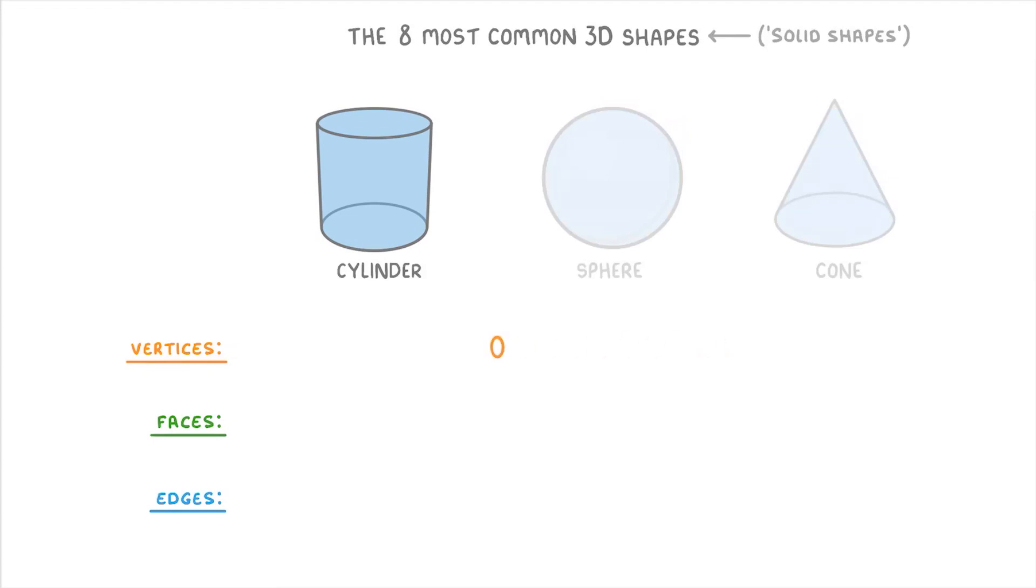If we start with a cylinder, these have no vertices, because there's no pointy corner bits.